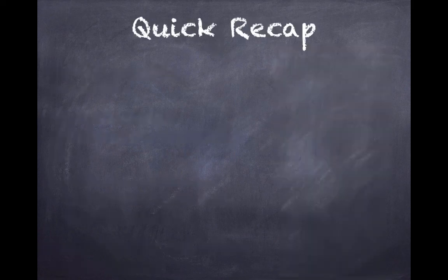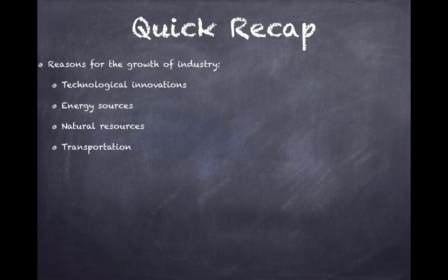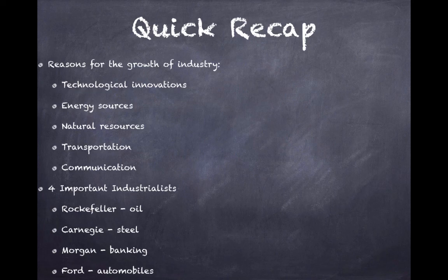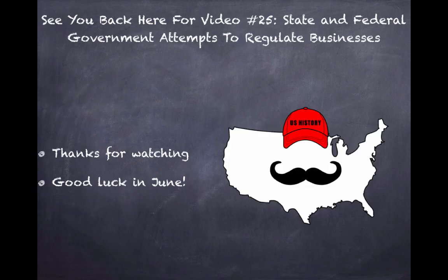Let's quickly recap: reasons for the growth of industry — technological innovations, energy sources, natural resources, transportation, and communication across the United States. The four most important industrialists for this time period, needed for your final exam: John D. Rockefeller from oil, Andrew Carnegie of steel, J.P. Morgan of banking, and Henry Ford with the mass production of automobiles — specifically the Model T. Look forward to seeing you back for video 25 on state and federal government attempts to regulate businesses, because some industries are becoming too powerful and too wealthy. Thanks for watching — best of luck and have a good day.